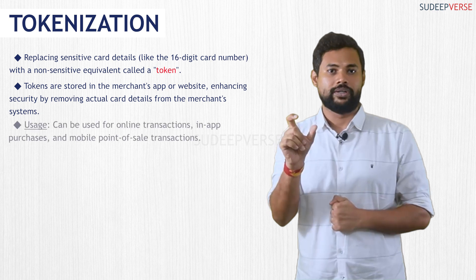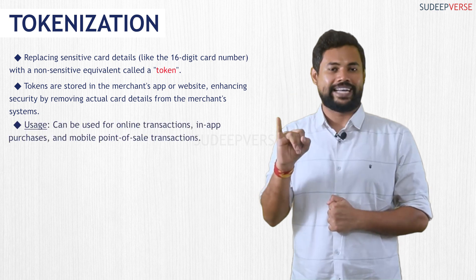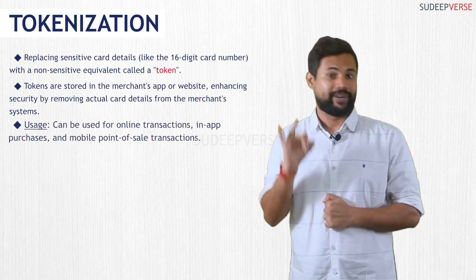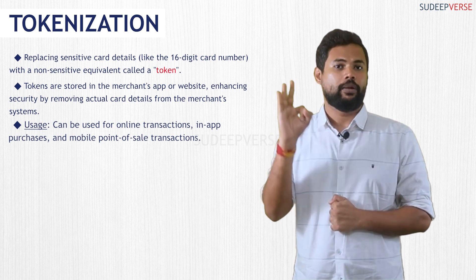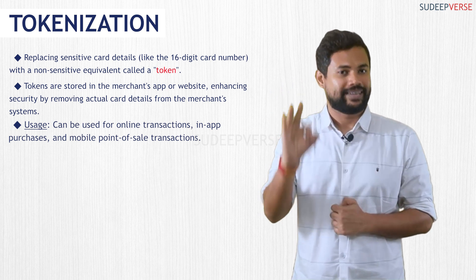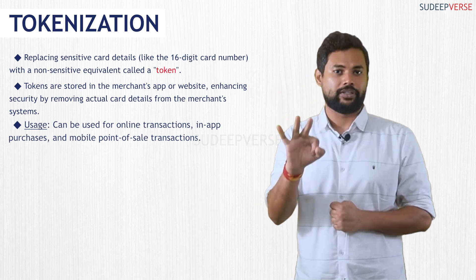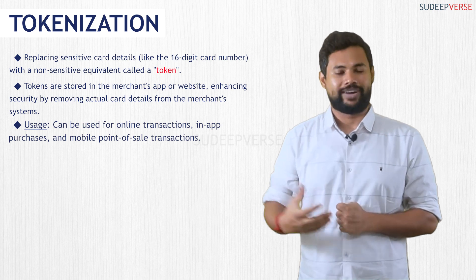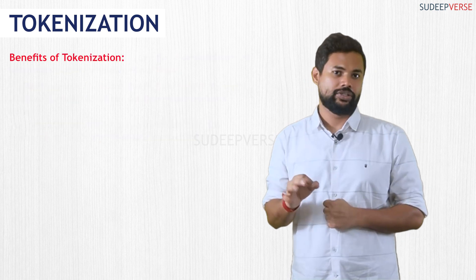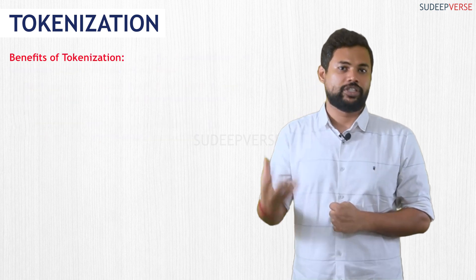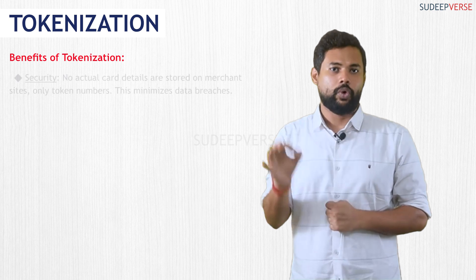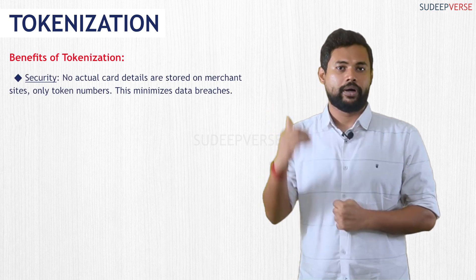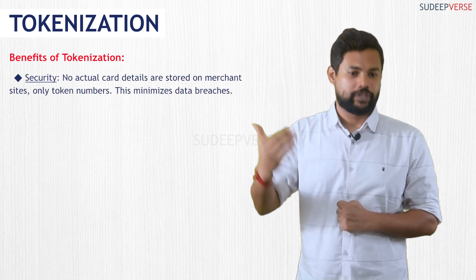The token can be used for online transactions, in-app purchases, as well as mobile point of sale transactions — these are the three areas where the token number can be used. In the merchant's app or data, no card detail is stored except the token number, which increases the layer of security.